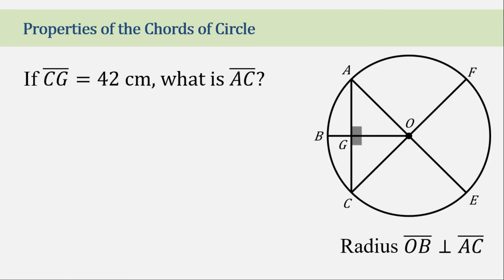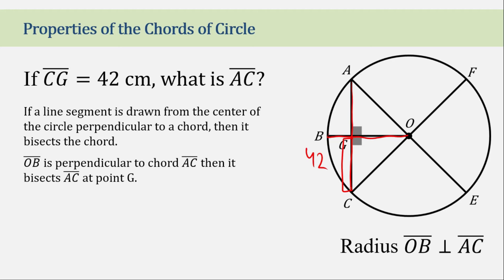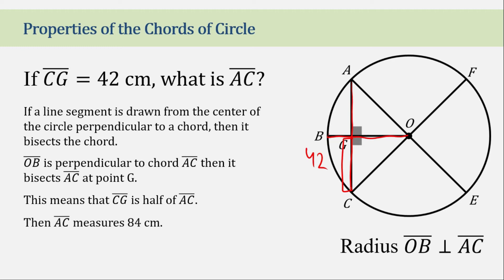Second example: if CG is 42 cm, what is the measurement of AC? Using the same theorem, this line bisects the chord, meaning GC is one half of AC. If GC is 42, then AC is equal to 84 cm.